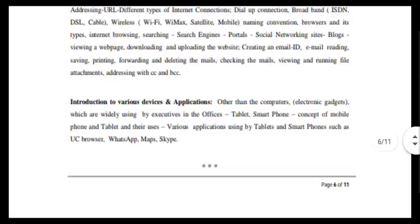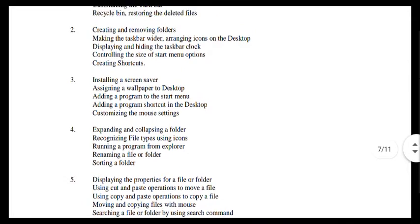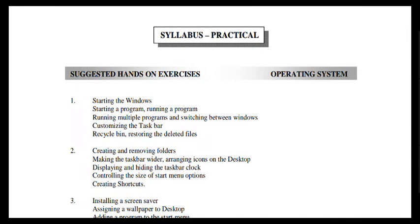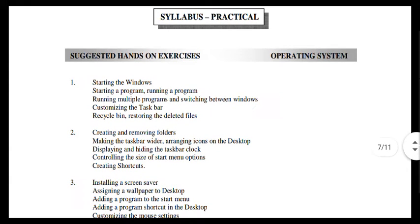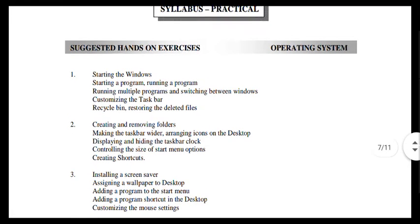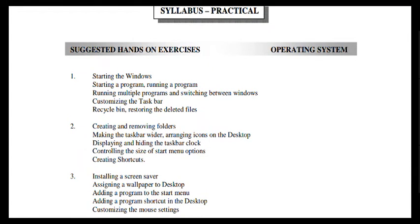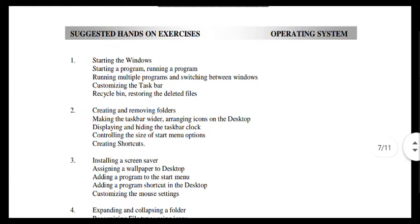Let's see how practical it is. Now let's start with starting Windows — start the program and run the program. Click the menu button. You can click the menu button and run it. There is a program that is multiplied and you can see the program that comes in.